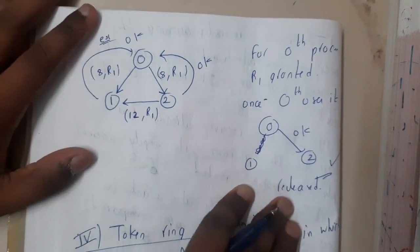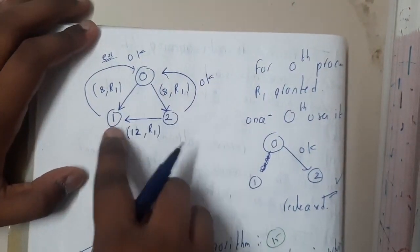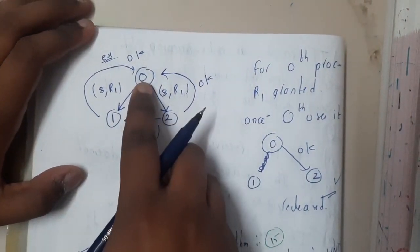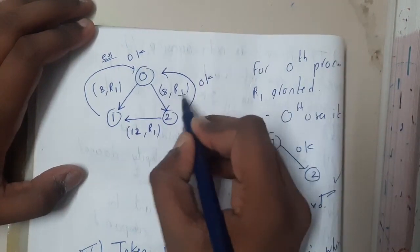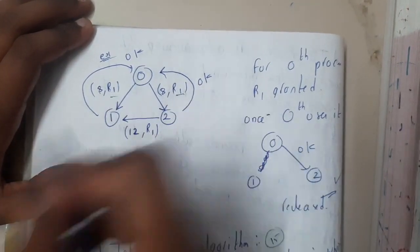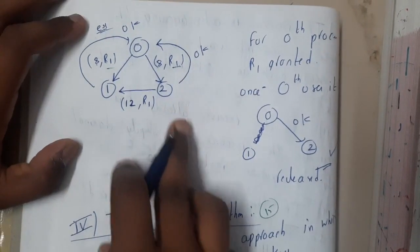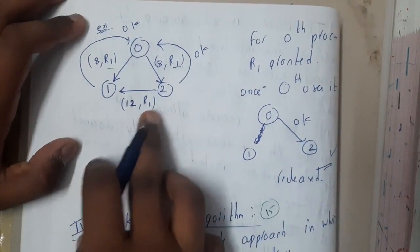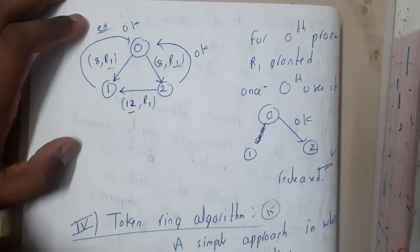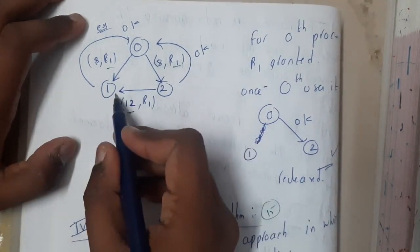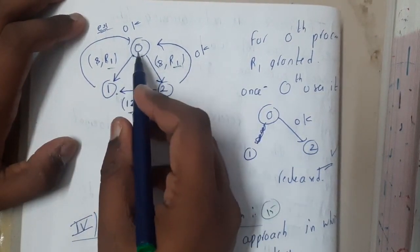This is a small example. Process zero, one, and two. Zero is requesting for resource R1, so its timestamp is 8. Eight comma R1 is sent. But R2 also wants R1, but its timestamp is 12. It sends a request to one, and it also sends to zero, but zero already wants it at timestamp eight.